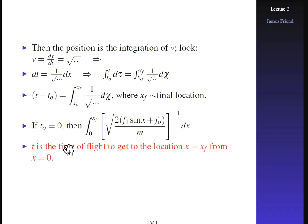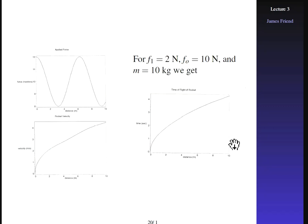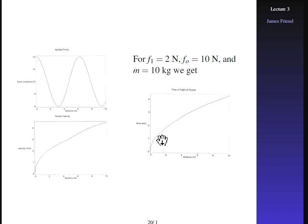We talked about the fact that we have a time of flight. If you wanted to get the position knowing the time, you have to invert this equation, and it turns out that's not quite so easy as it might sound. Sometimes you can get the time of flight and then have to iterate to get back out what the final position is. The applied force changes as the rocket moves along — from zero to four to six to eight to ten meters — and the rocket velocity shows a bit of undulation.